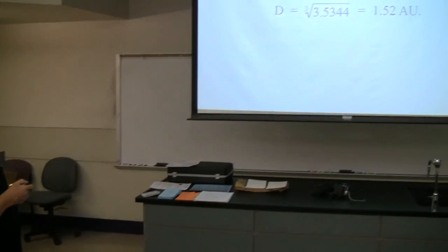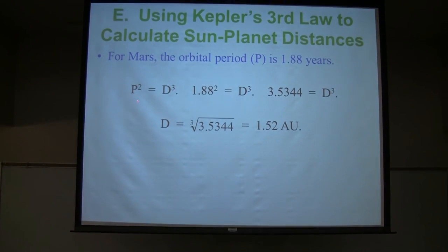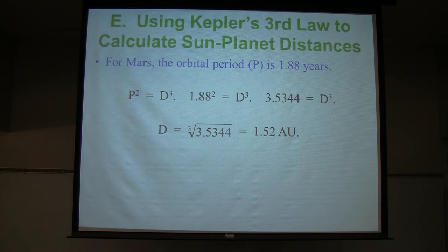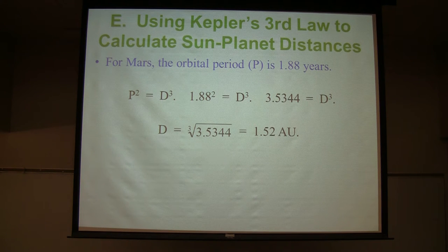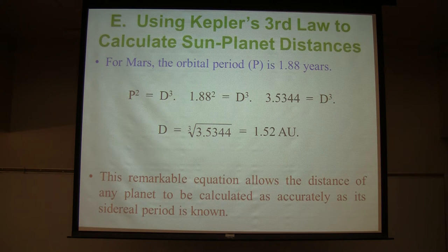Kepler's third law states that the period squared equals the distance cubed, in terms of Earth years and one astronomical unit. Mars takes 1.88 Earth years to go around the Sun — solving for the distance gives 1.52 astronomical units. You no longer have to measure the distance to Mars; all you need is the length of its year, and Kepler's laws allow you to calculate the distance. This applies to any planet, comet, or asteroid — something newly discovered works the same way.